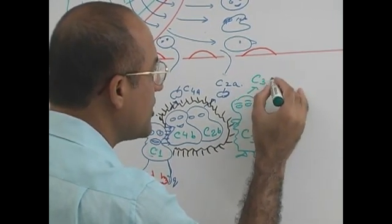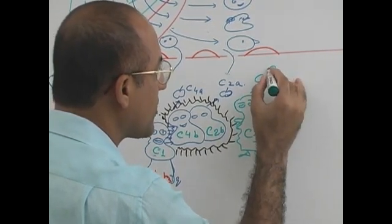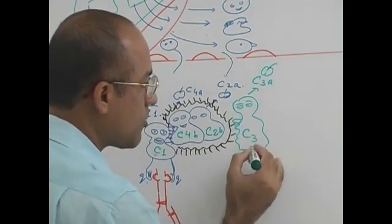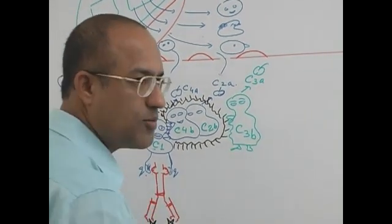And this baby will be activated by the C3 convertase. And it will also lose its staple. What will be that? C3A. Right? And what will be left behind? C3B.